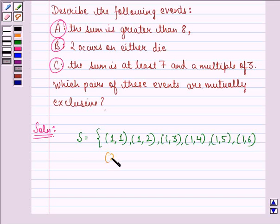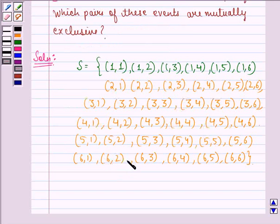Similarly, getting 2 on first die and 1 on the second die. And so on, we will have till (6,6). So, this is the sample space of the event when a pair of dice is rolled.